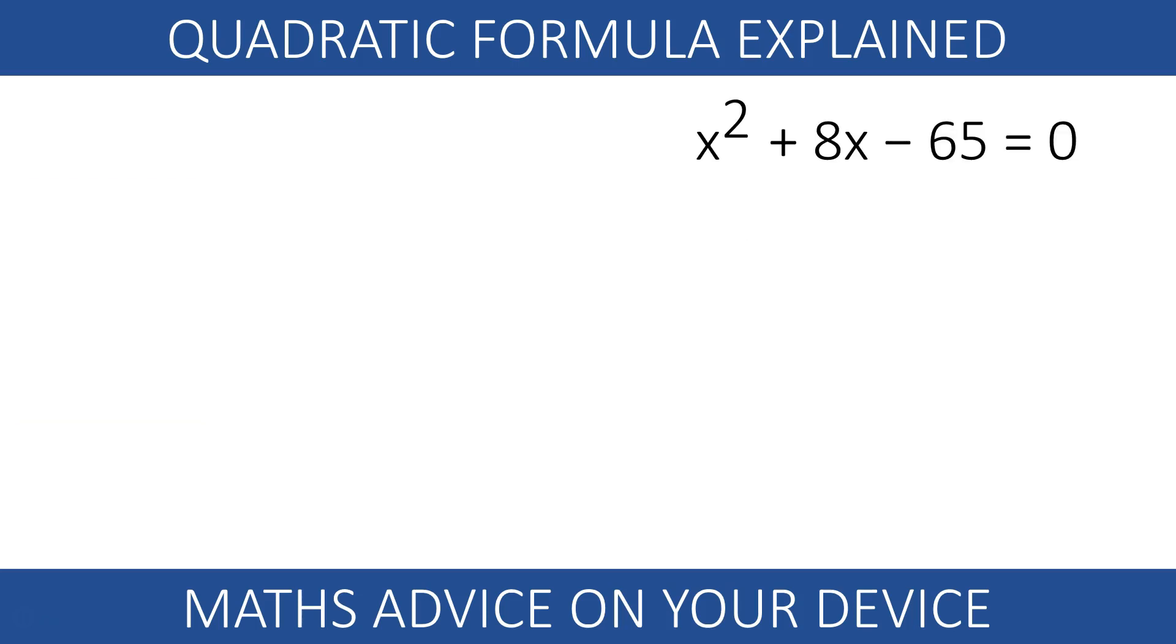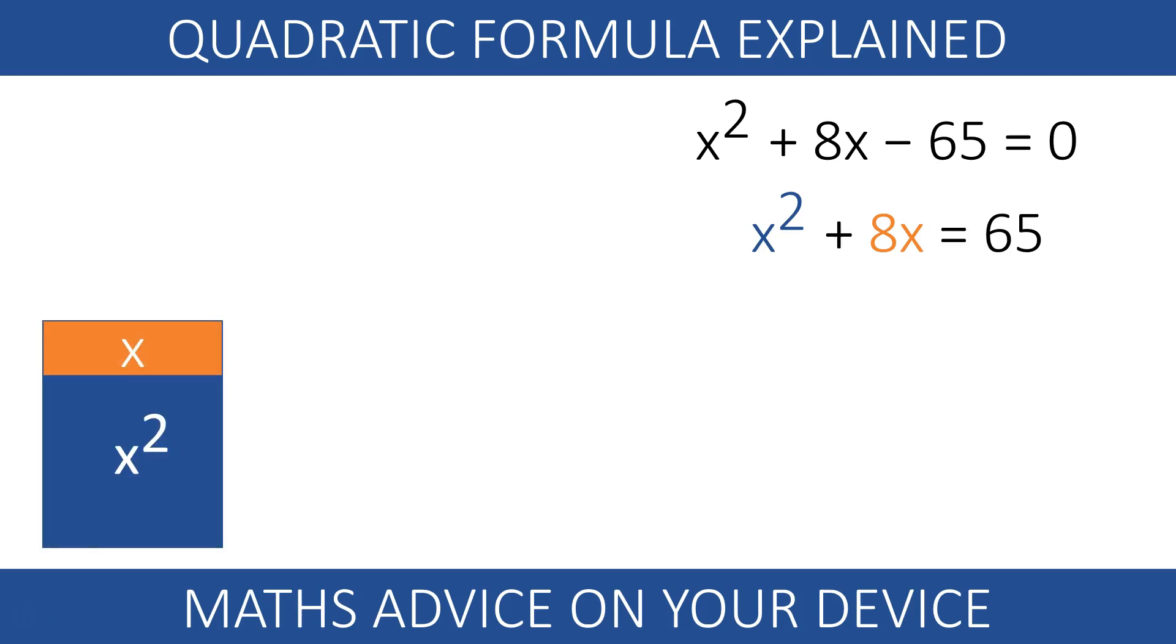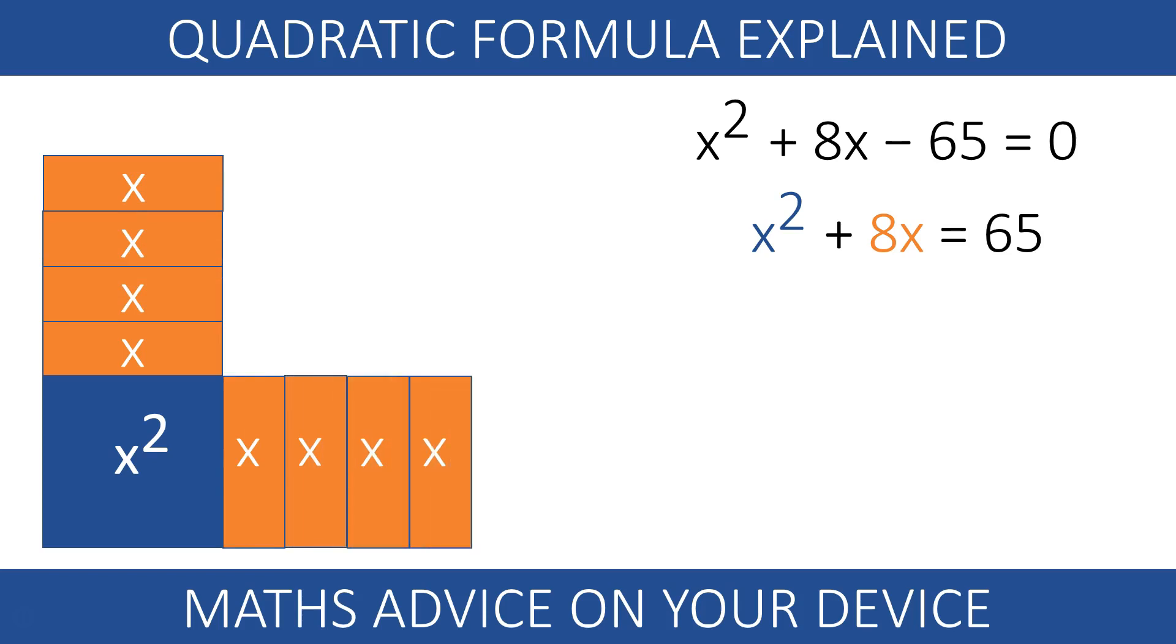Let's try that again. We are solving x squared plus 8x minus 65 equals 0. We park the number to the other side of the equation. We draw a square side x and we share the 8 rectangles with length x and height 1 into 2 groups.